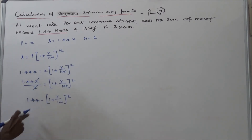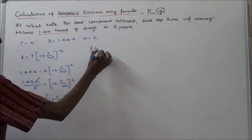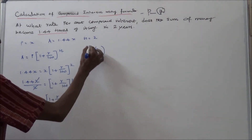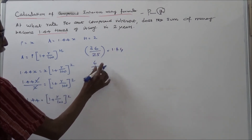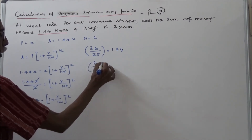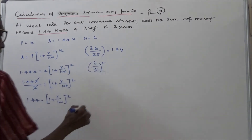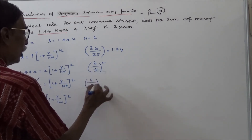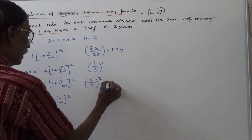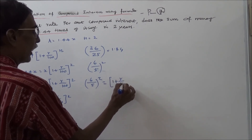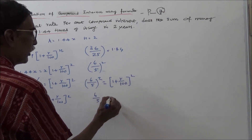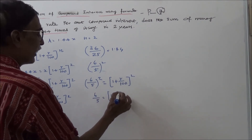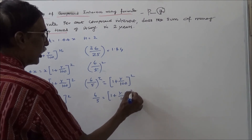Now, 1.44 can be written as 36 by 25, which equals 6 by 5 whole squared. So we have 6 by 5 the whole square is equal to 1 plus R by 100 to the power 2. Taking square roots on both sides: 6 by 5 is equal to 1 plus R by 100.